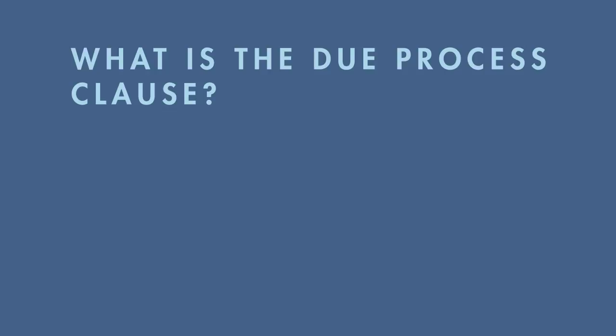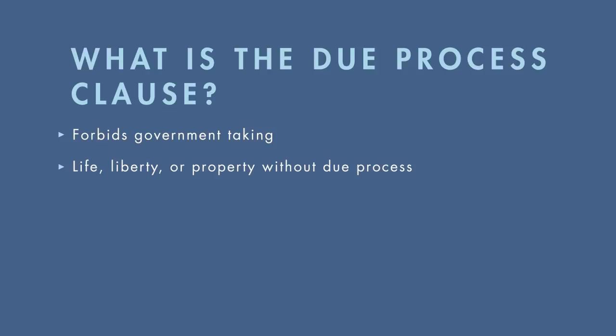The Due Process Clause forbids the government from taking a person's life, liberty, or property without due process of law. There are two components of due process: procedural due process and substantive due process.